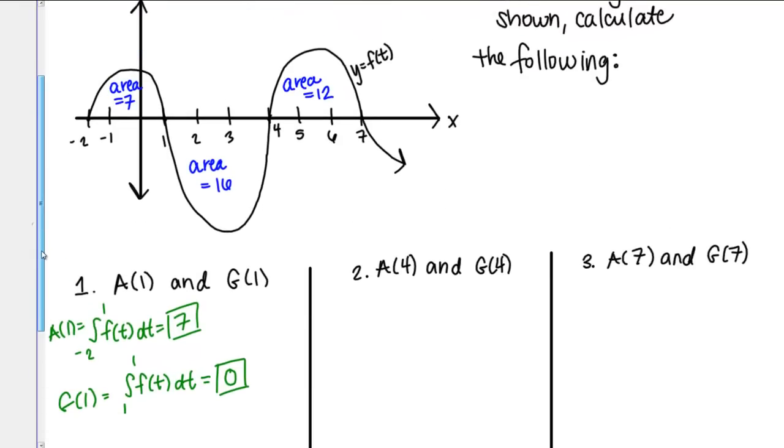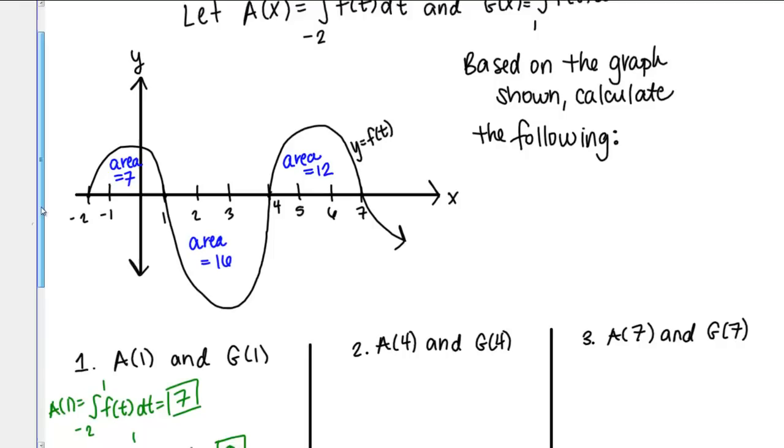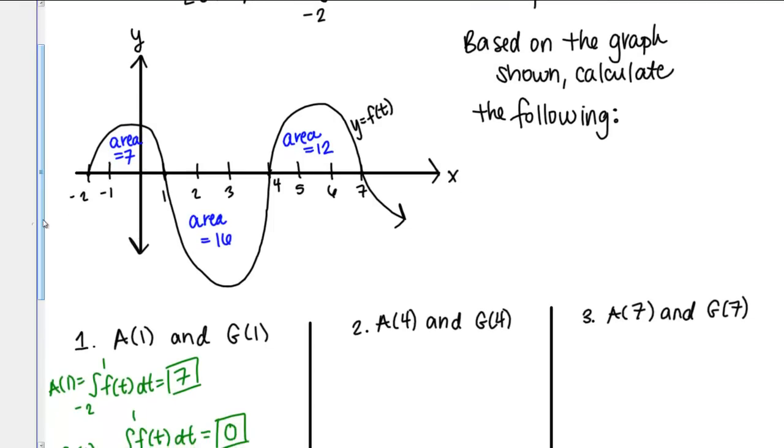That's A of 1 and G of 1. Let's do the same thing now for A of 4 and G of 4. Still using my A of X area function, if I plug in 4 for X, it's going to be the integral from negative 2 to 4 of F of T DT.